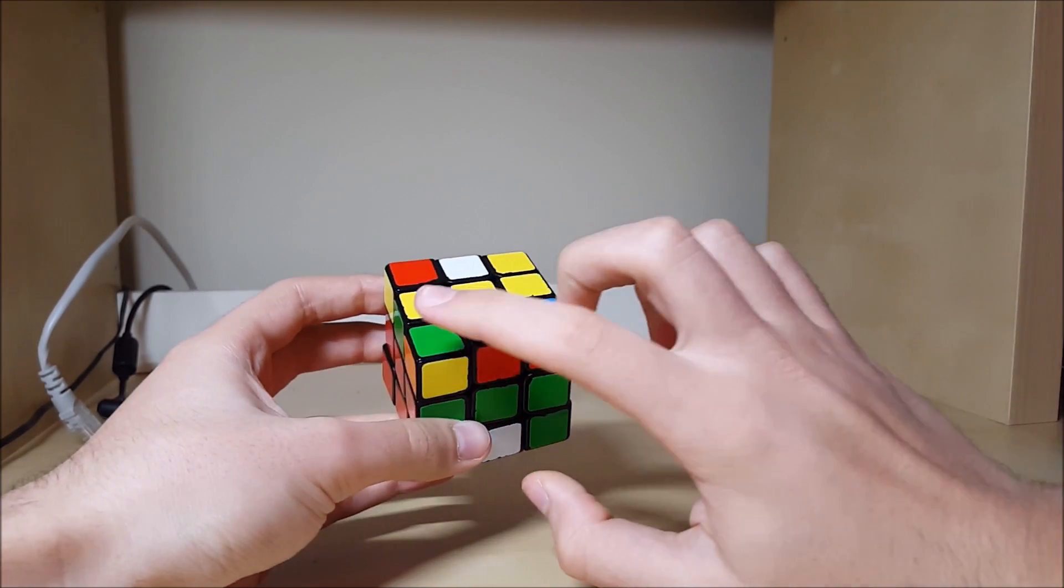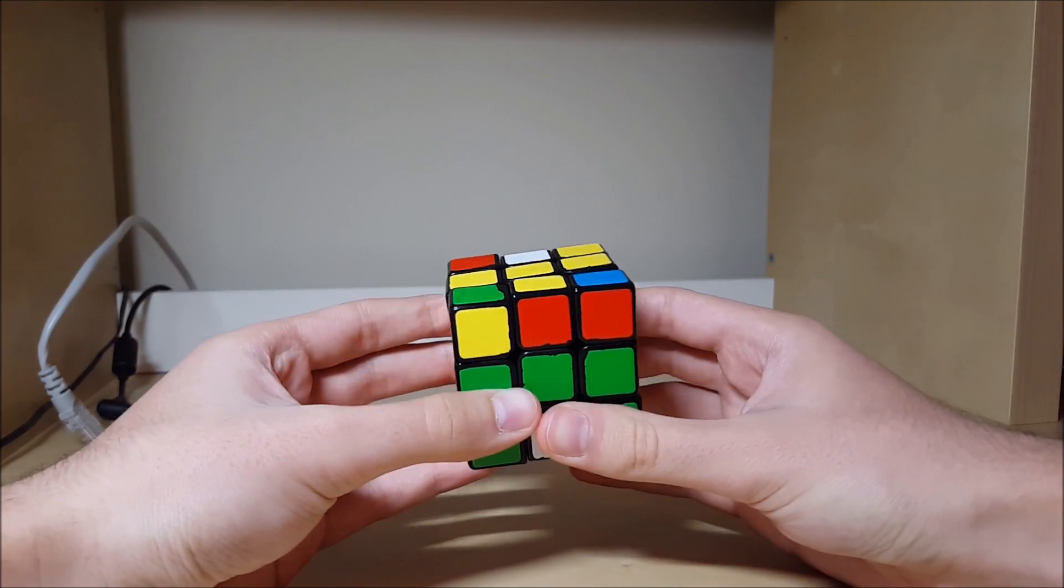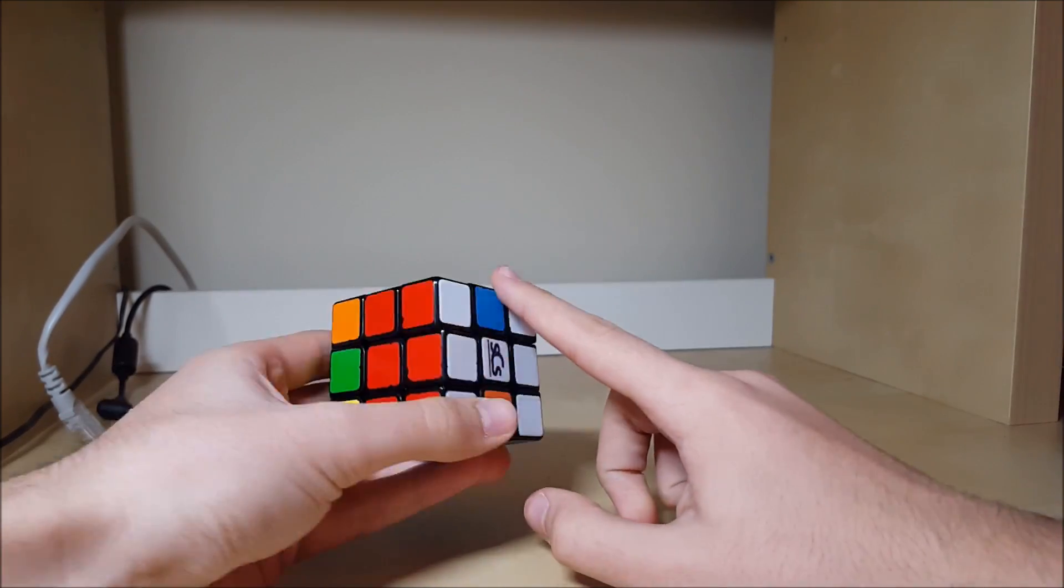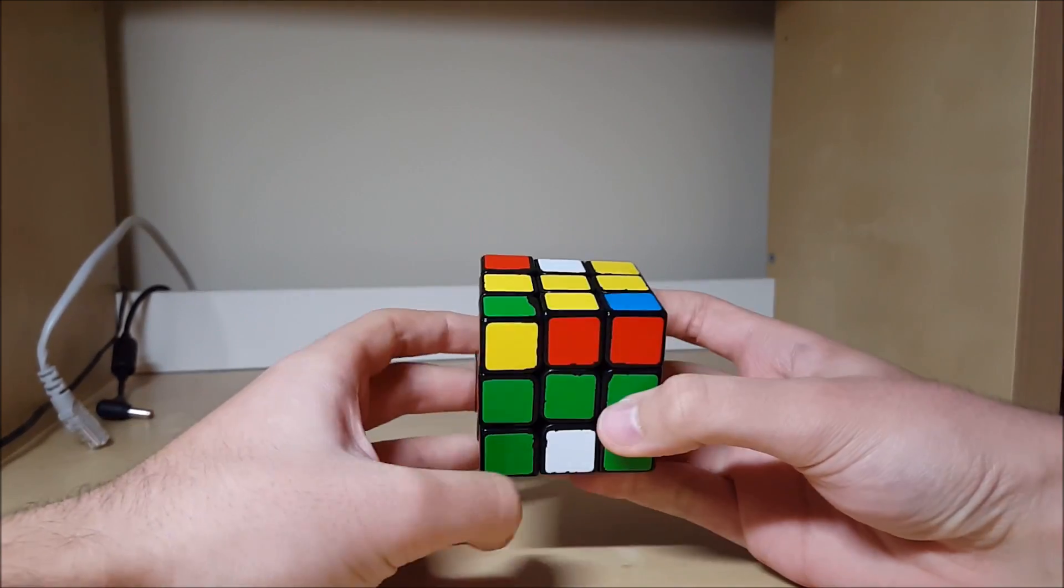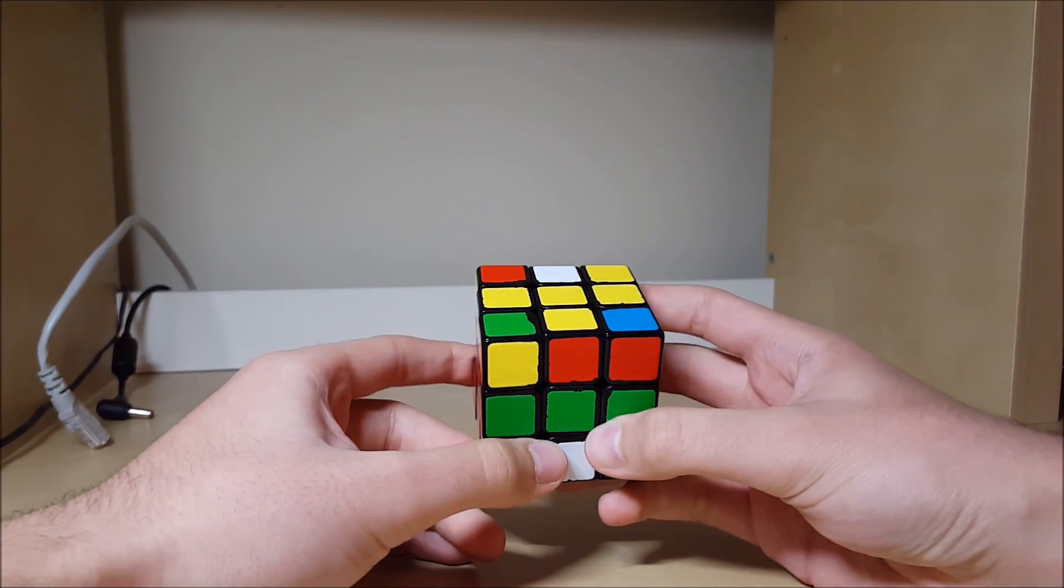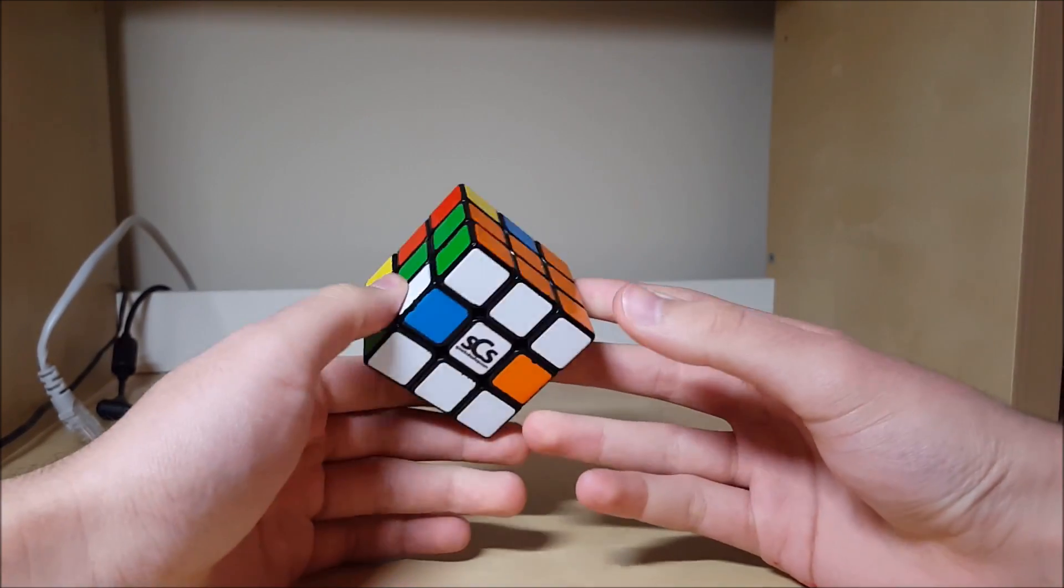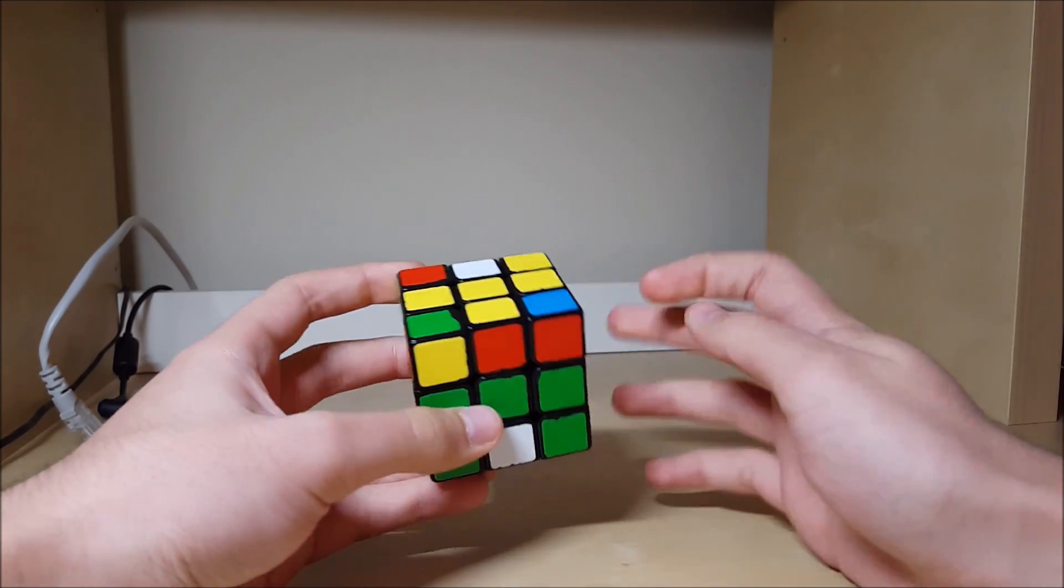The third step of the Roux method is to solve the four corners on top, and you do this once you've built both blocks on the left and the right.